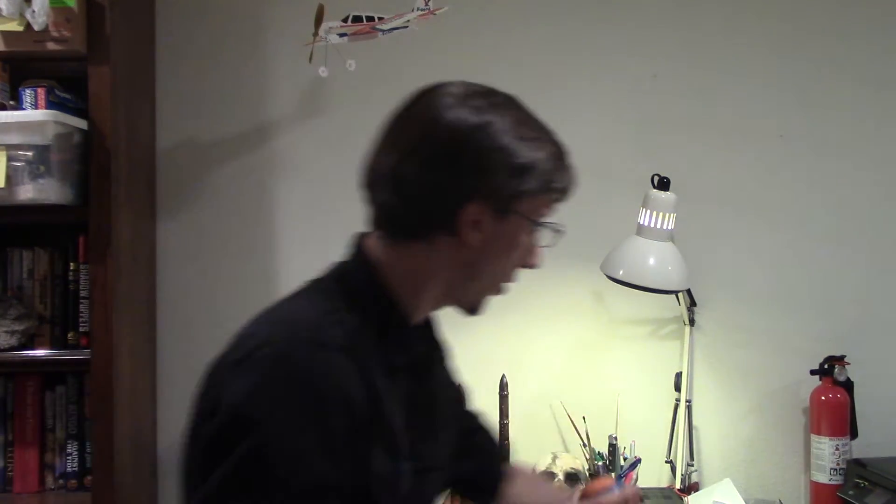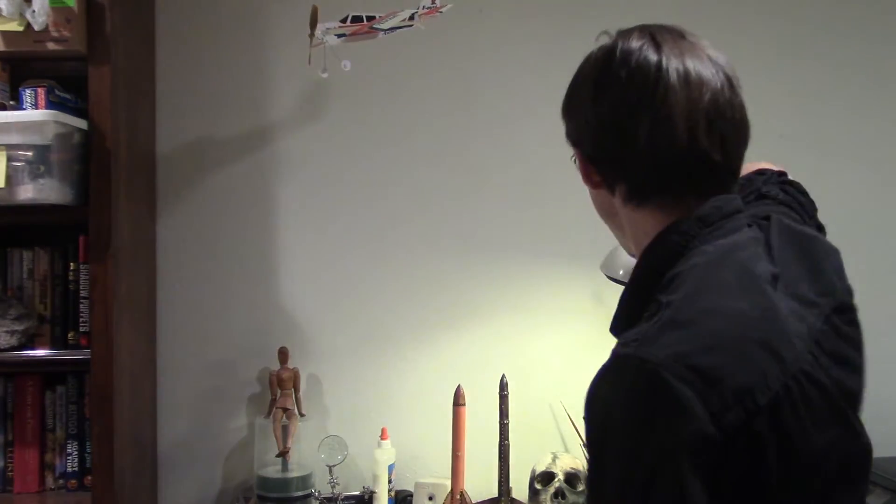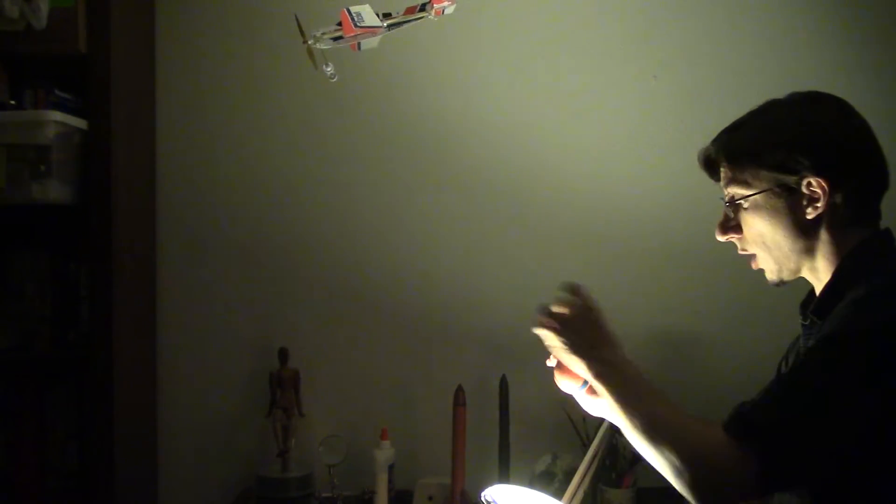Let's say this is the Earth, this is the Moon, and this is the Sun. As the Earth goes around the Sun, the Moon goes around the Earth.